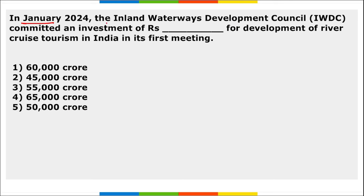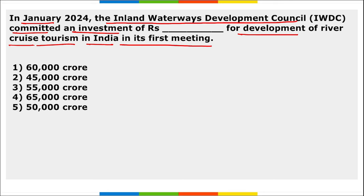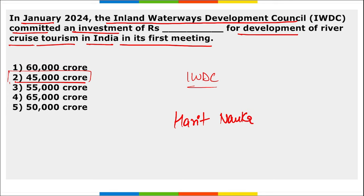The Inland Waterways Development Council (IWDC) committed an investment of 45,000 crore rupees for development of river cruise tourism in India in its first meeting. Of this, 35,000 crore rupees is allocated for cruise vessels and 10,000 crore rupees for development of cruise terminal infrastructure by 2047. 'Harit Nauka' — the green transition guidelines for inland vessels — was launched by Union Minister of Port, Shipping and Waterways Sarbananda Sonowal.